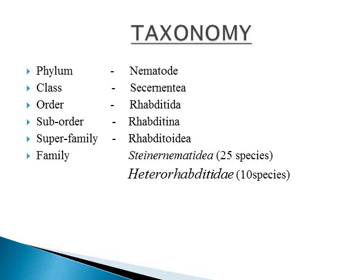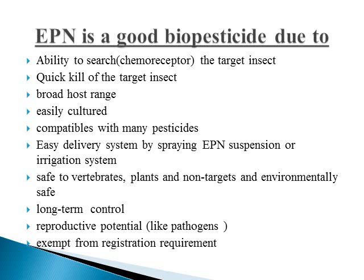Taxonomy of nematodes: The phylum is Nematoda, also called Syrenimata; Order Rhabditida; Suborder Rhabditia; Superfamily Rhabditoidea; Family Steinernematidae and Heterorhabditidae. These are the families that include the nematodes which cause the entomopathogenic effect.